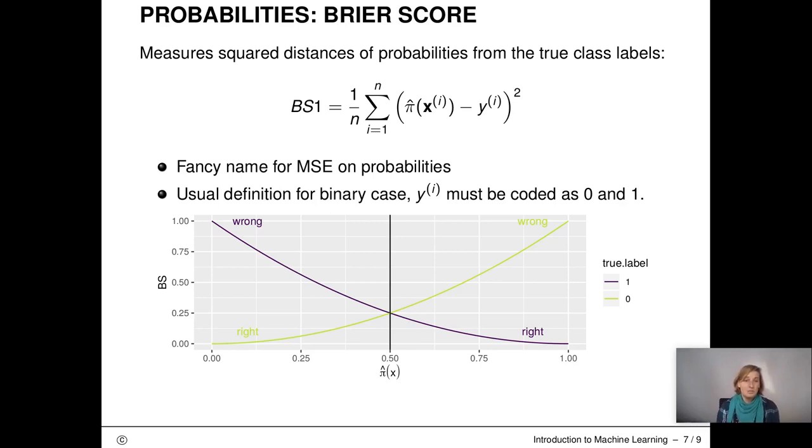The next measure we want to look at is one for probabilities. This measure is called the Brier score. The Brier score measures the squared distances of probabilities from the true class labels. This is something we have already seen before, right? It's nothing different than the mean squared error.